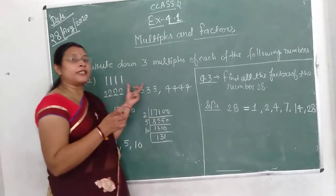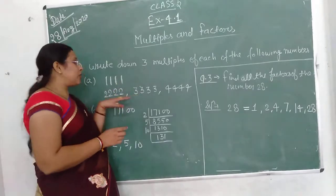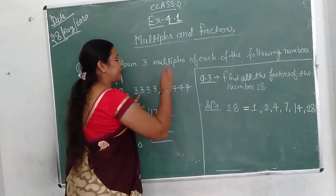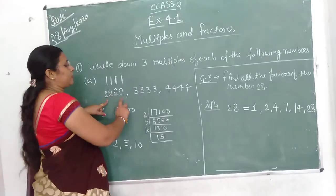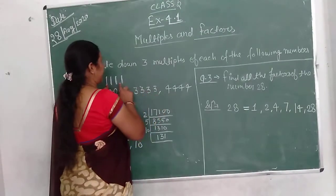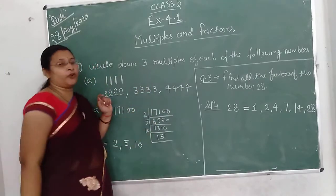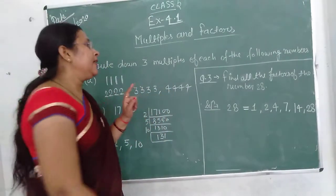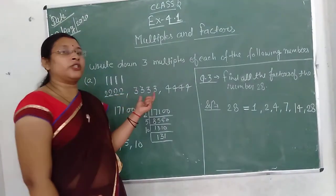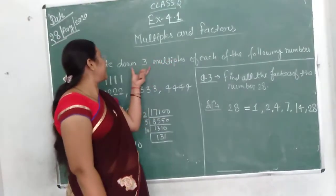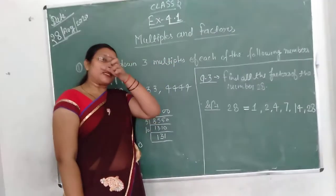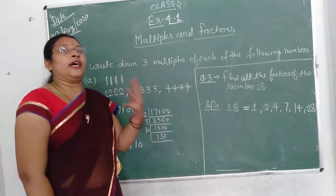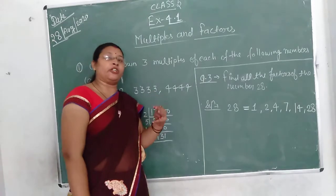If you have to find three multiples, you take two, three, and four. So the answers for part B involve numbers like two, three, nine, and one — same pattern as two, three, four. The three multiples are written by taking three such values.